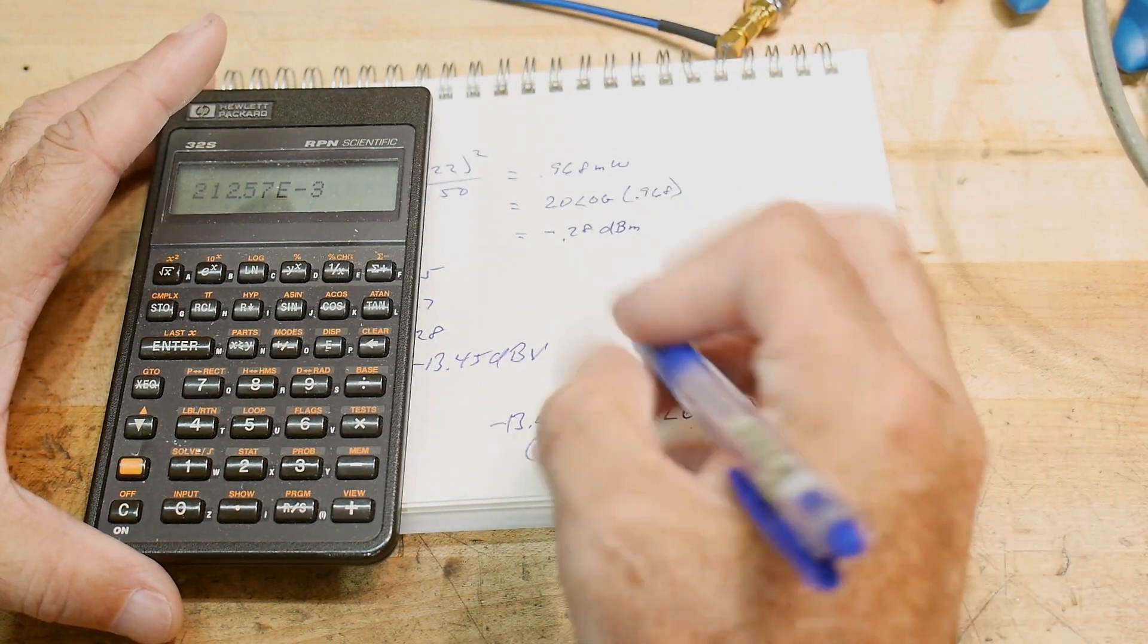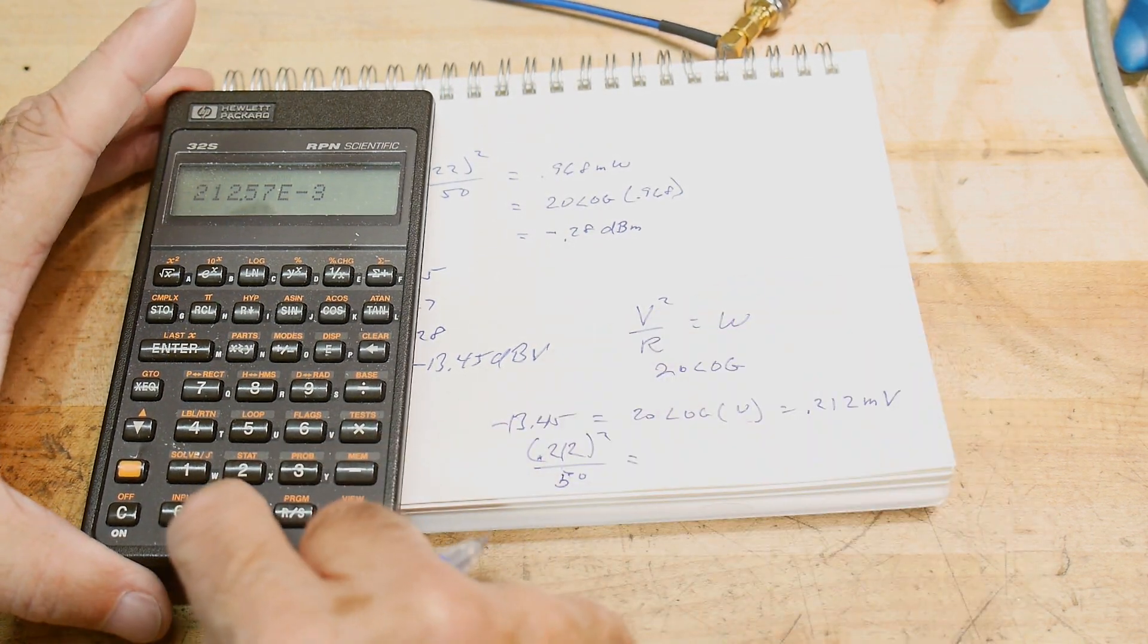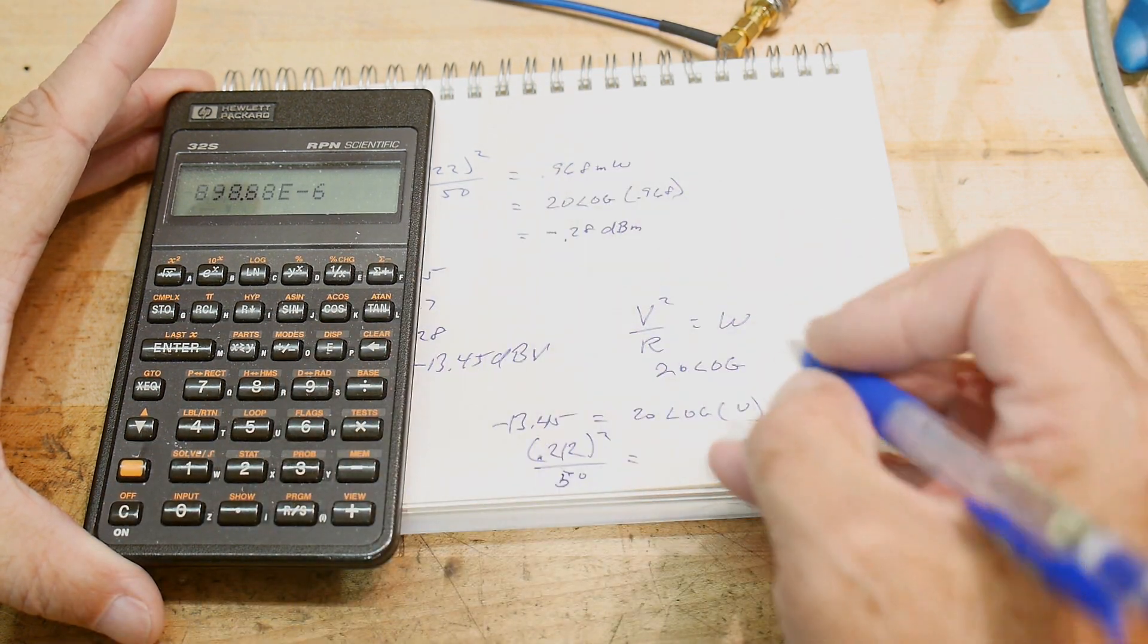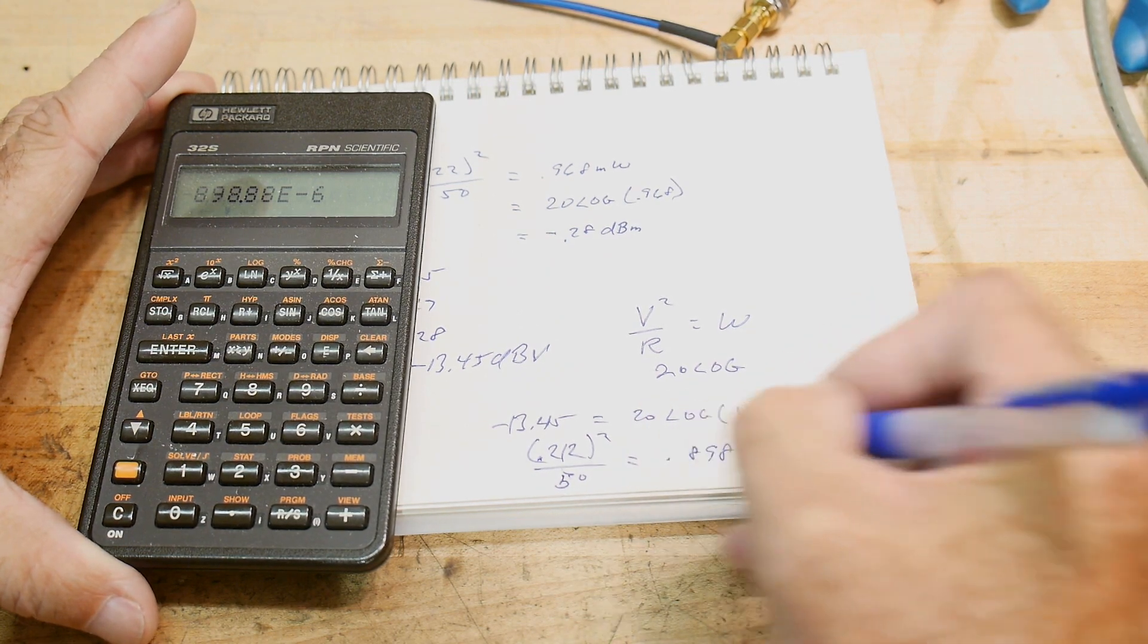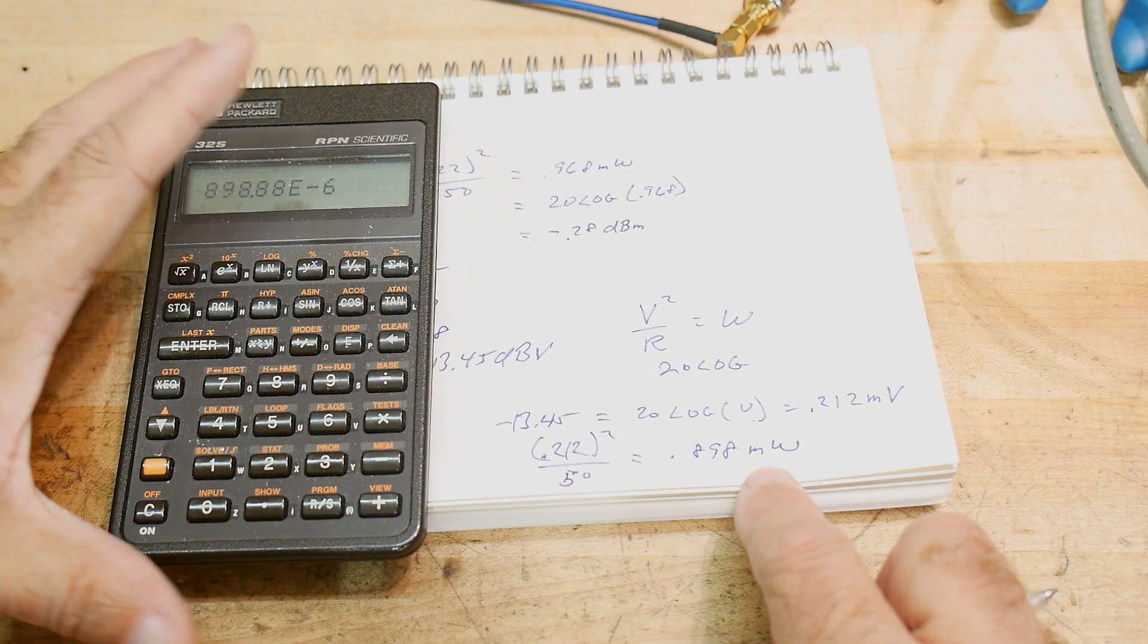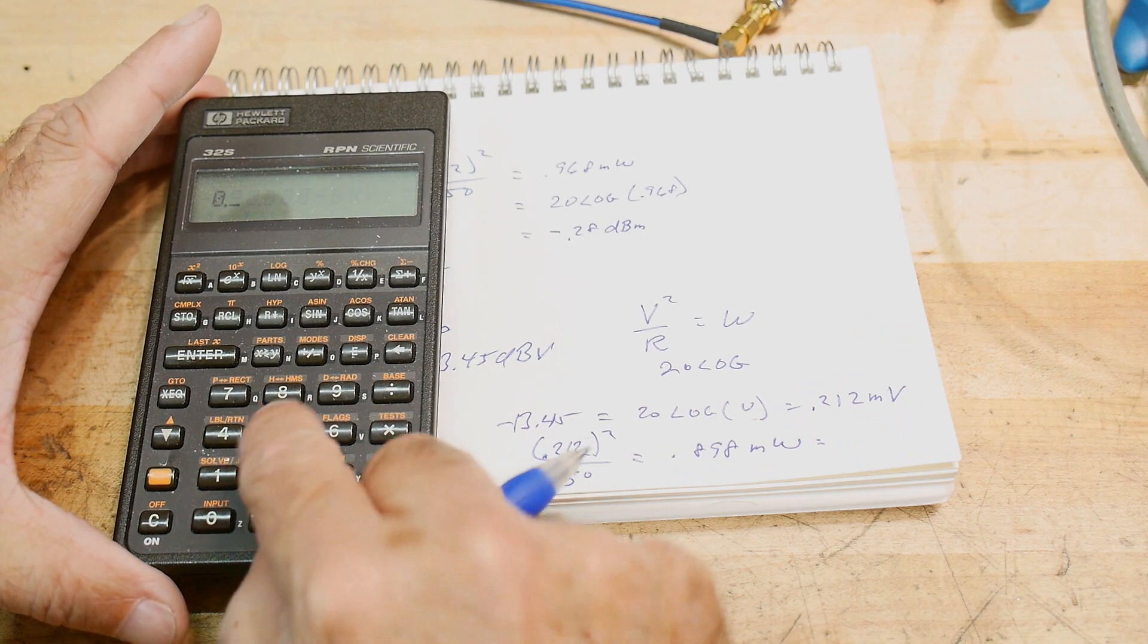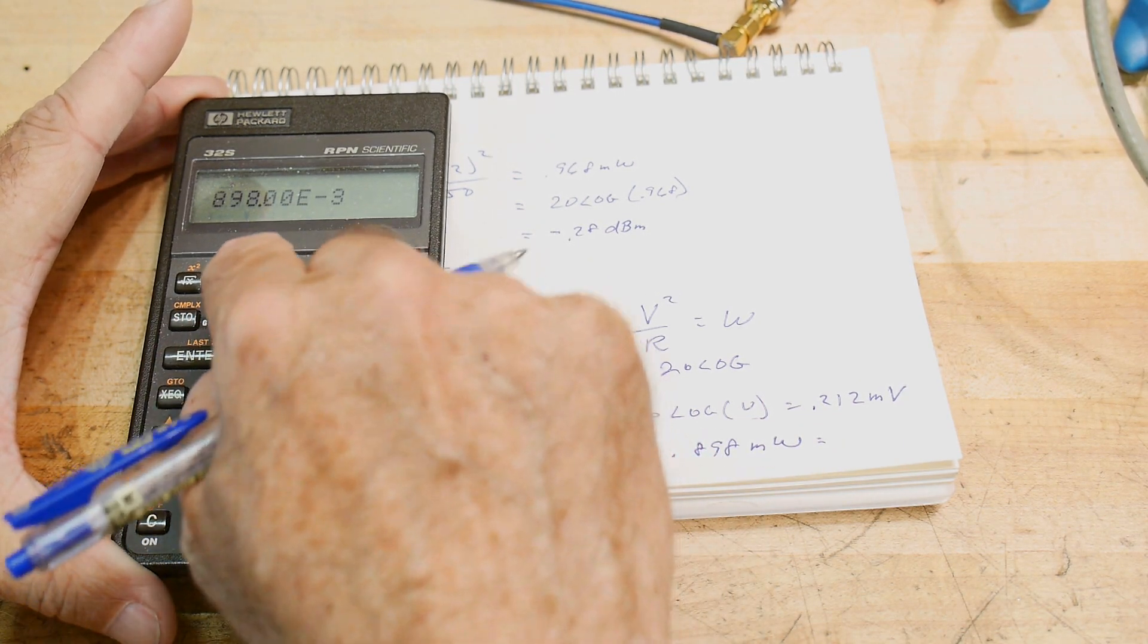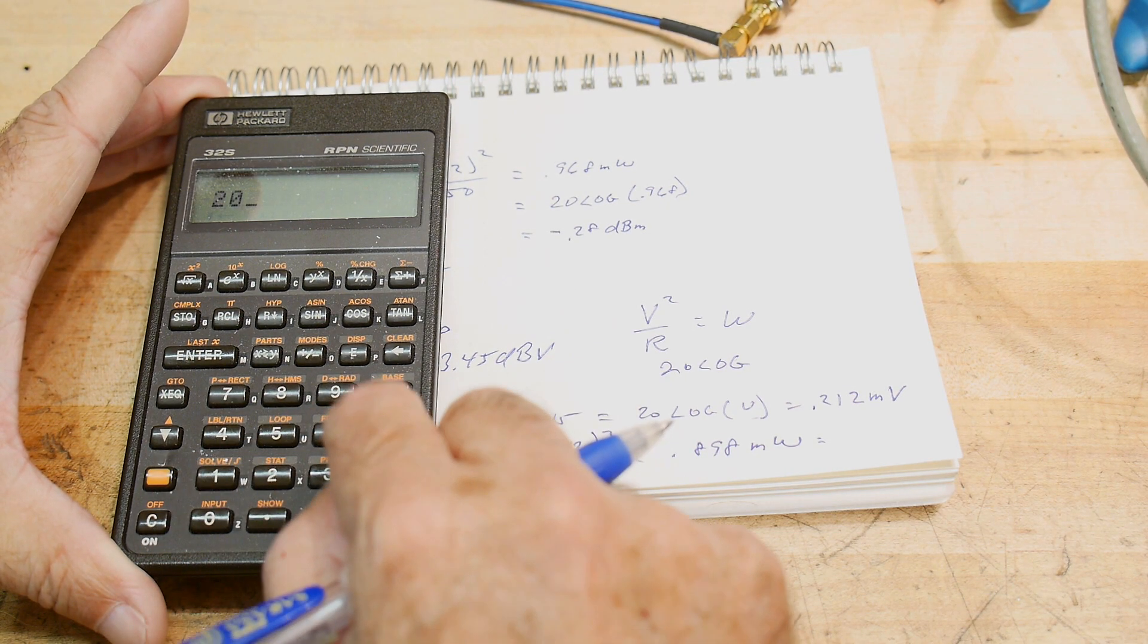And V squared over R equals 0.212 squared divided by 50 equals 0.898 milliwatts.